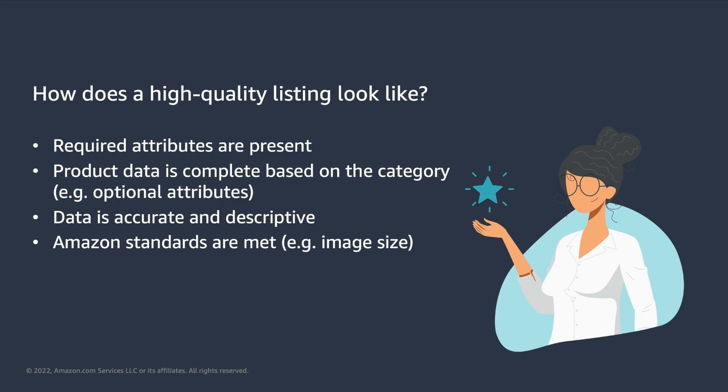So, how does a high-quality listing look? First of all, mandatory attributes are present. Amazon defines the minimum required data and it is important to include all of it in listing submissions. Product data should also be complete based on the category. While some attributes are optional and omitting them would not result in a listing submission being rejected, ideally, selling partners should include as much information as possible. This positively improves the buyer experience, which, at the end of the day, is Amazon's main goal. Data also has to be accurate and descriptive and meet Amazon standards. For example, images, size, and content has to adhere to Amazon requirements. Following these recommendations will help you achieve better results.